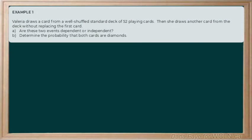Let's throw some numbers in there and take a look at our first example. Valeria draws a card from a well-shuffled standard deck of 52 playing cards. We're probably becoming quite familiar with the deck of cards by now. Then she draws another card from the deck without replacing the first card. That little phrase there is very key. Part A wants to know whether or not these events are dependent or independent, and then part B would like us to determine the probability that both cards are diamonds.